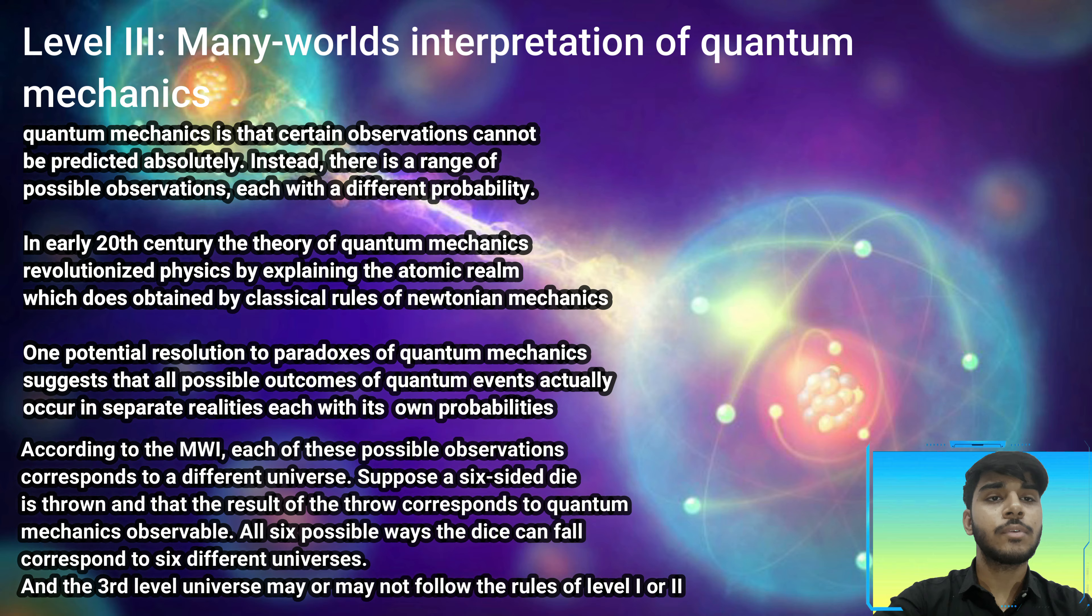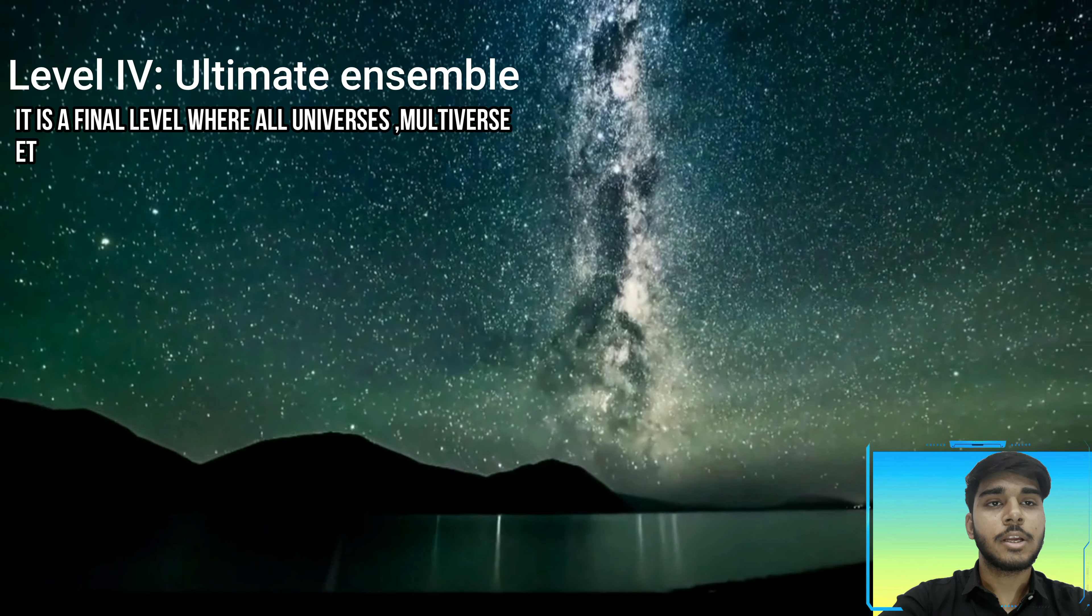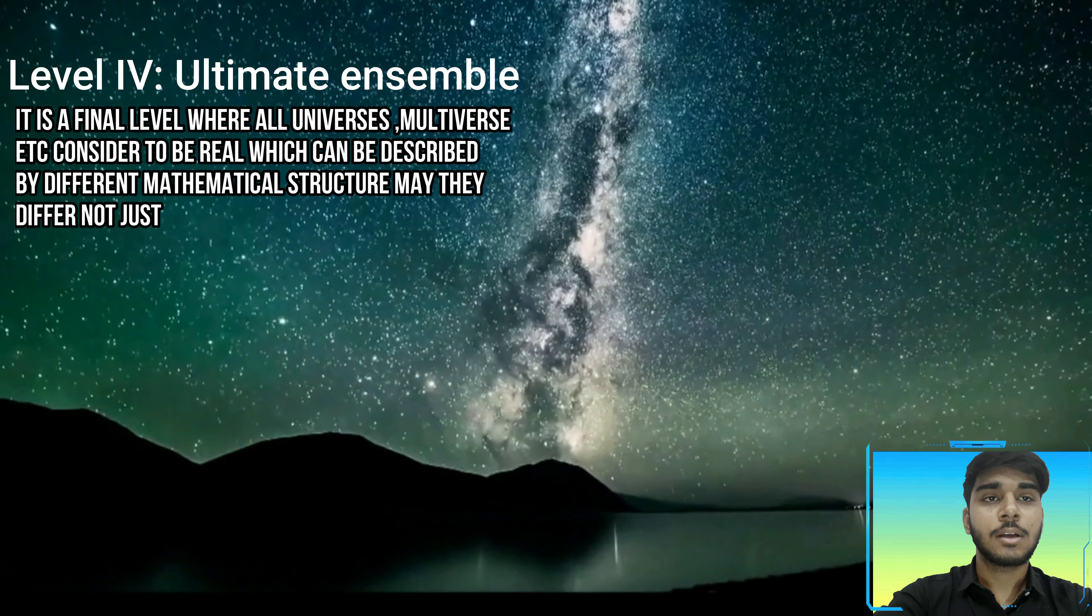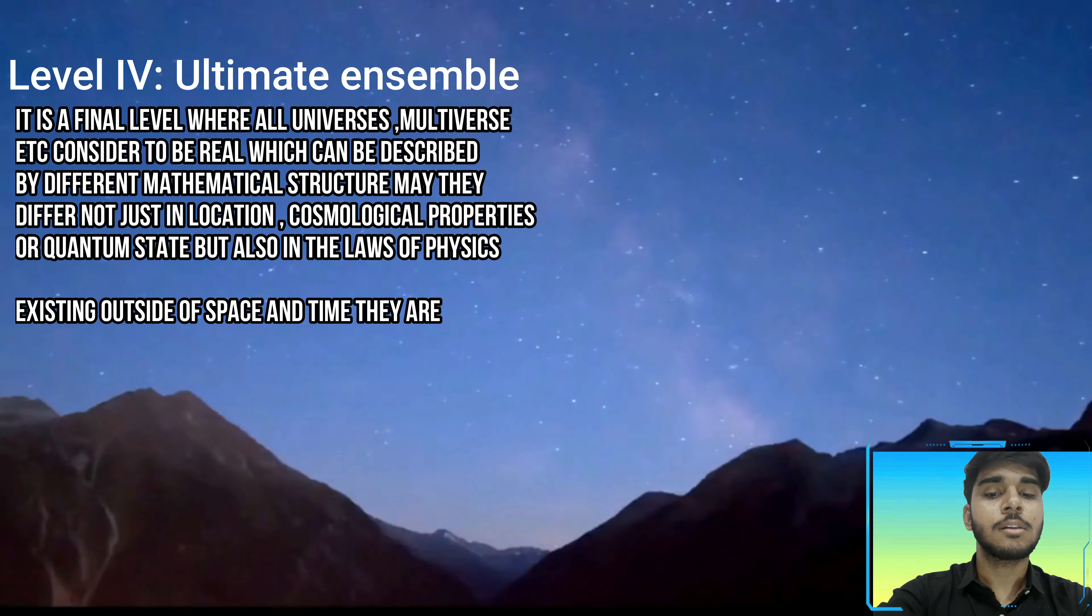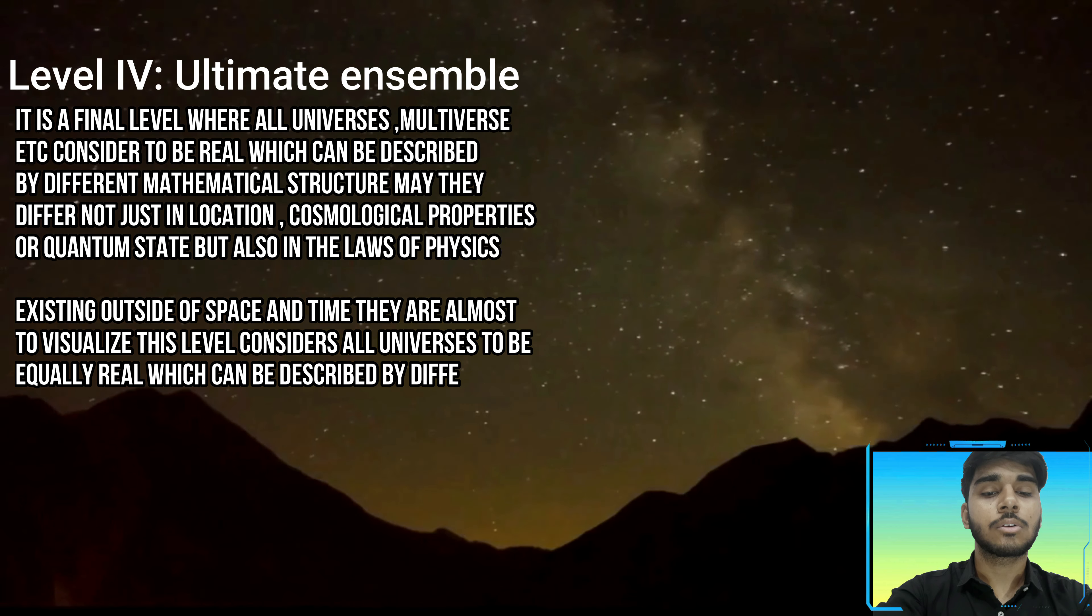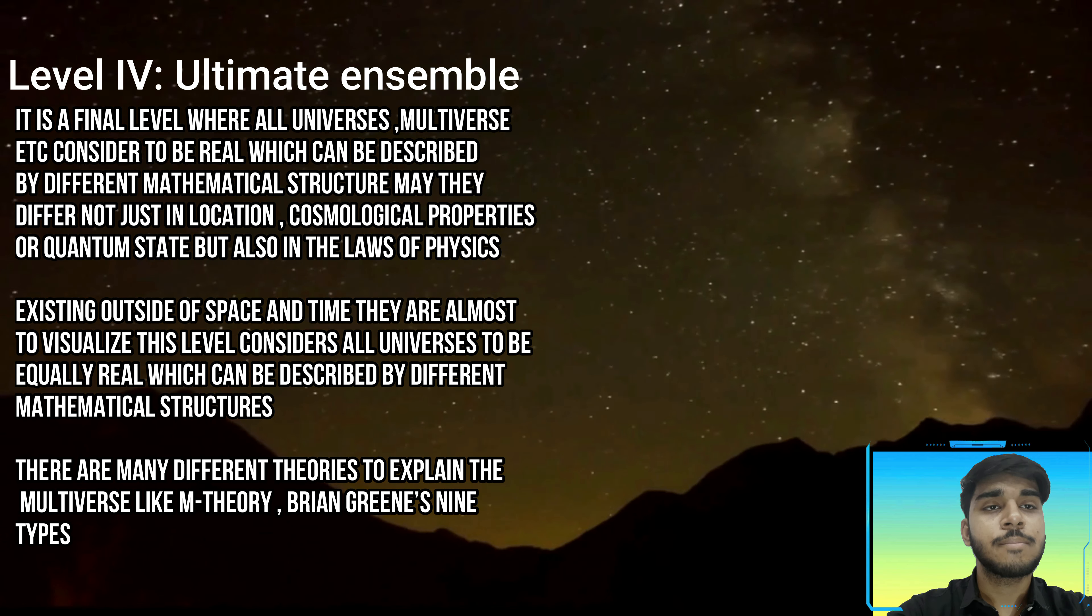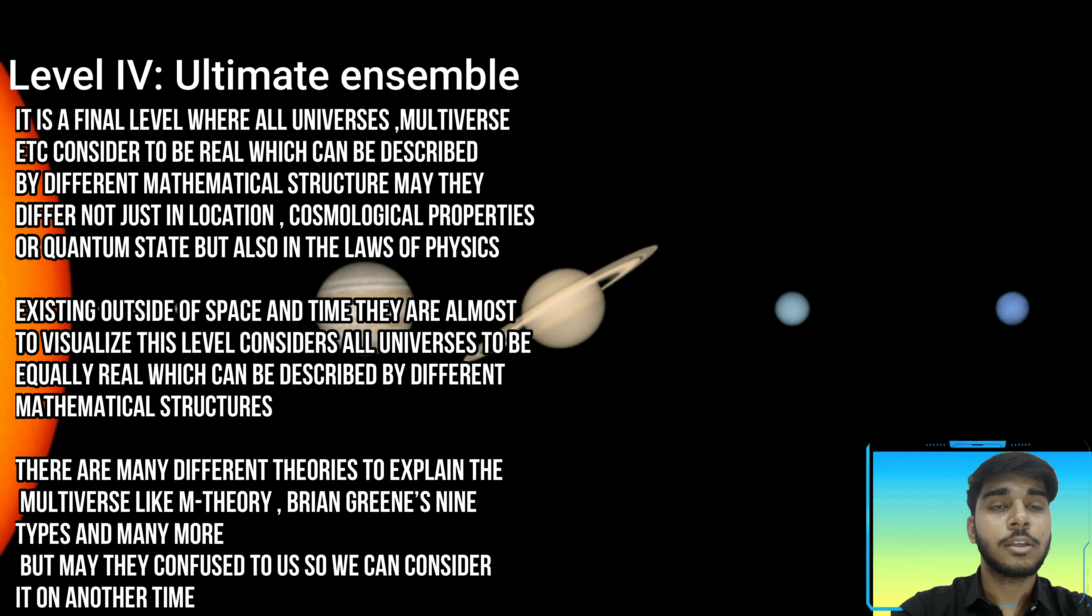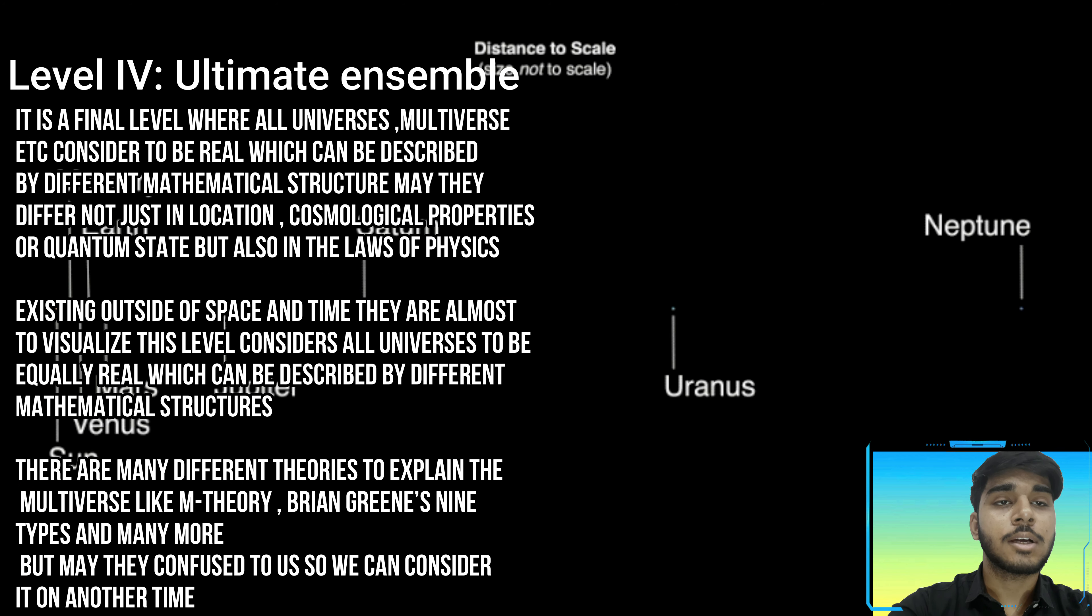Level Four: Ultimate Ensemble. It is a final level where all universes and multiverses are considered to be real, which can be described by different mathematical structures. They may differ not just in location, cosmological properties, and quantum state, but also in the laws of physics. Simply, this means that all the mathematical calculations of other universes or multi-universes that are predicted are real or are considered to be real.